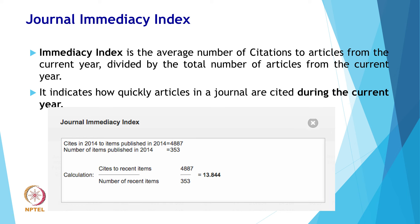The journal immediacy index is the average number of citations to articles from the current year divided by the total number of articles from the current year. It indicates how quickly articles in a journal are cited during the current year. For example, to calculate the journal immediacy index for 2023, you take citations in 2023 to items published in 2023 and divide by the total number of items published in 2023.